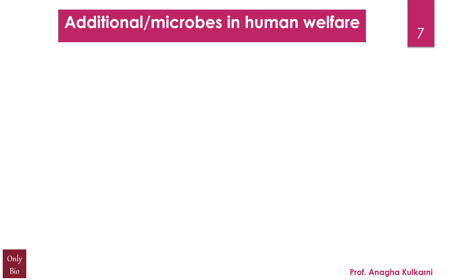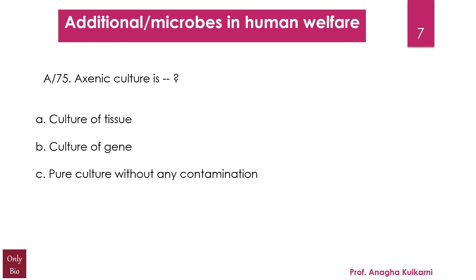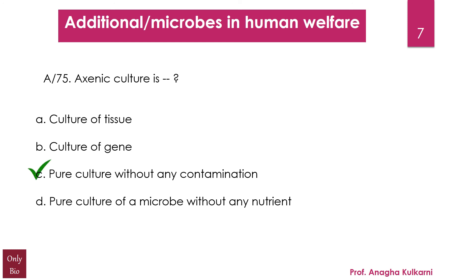The last question can be related to microbes in human welfare. Axenic culture is dash. Options: A. culture of tissue, B. culture of gene, C. pure culture without any contamination, D. pure culture of a microbe without any nutrient. The correct answer is C — pure culture without any contamination. In other words, it is germ-free and uncontaminated, consisting of a single species or strain of organisms with absolutely no other bacterium growing alongside it. Axenic culture was first developed by scientist Diamond in 1961. Other types of culture include xenic culture, polyxenic culture, and monoxenic culture.